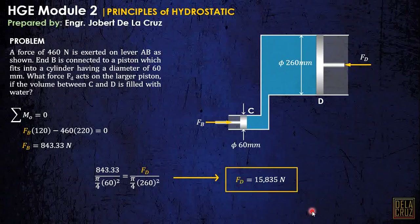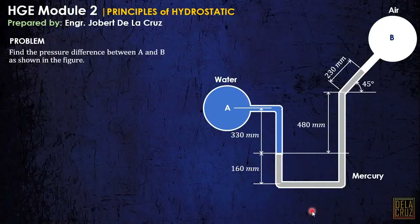The force at B is calculated as 15,835 Newtons from the moment equation. From pressure equality we then find FD. This problem is straightforward once the principle is applied. The next problems involving pressure will be covered in the next video.